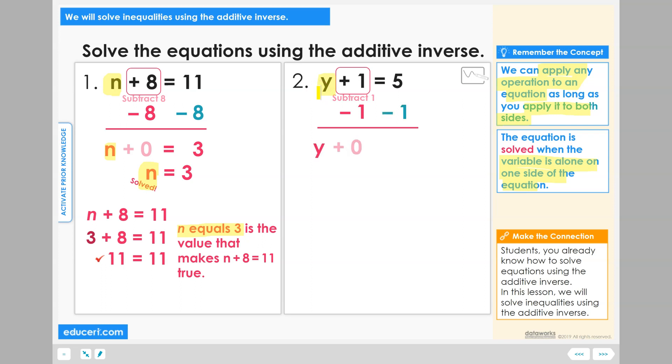You would then end up with y plus 0 on your left hand side and 5 minus 1 is 4 on your right hand side. And y plus 0 is just y, so you should have the solved equation: y equals 4.